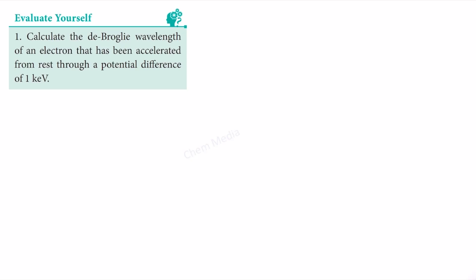Hello everyone. Here is a question from the quantum mechanical model of atom: calculate the de Broglie wavelength of an electron that has been accelerated from rest through a potential difference of one kilo electron volt. We know that de Broglie wavelength lambda is equal to h divided by p.